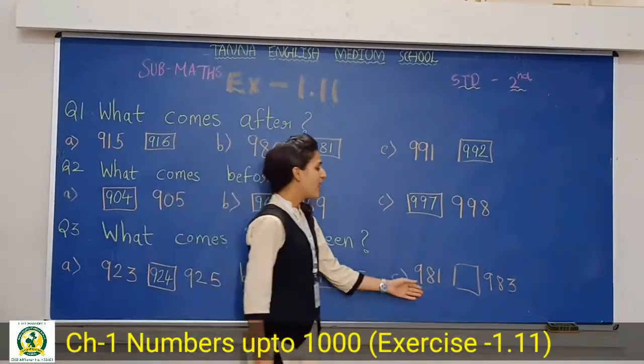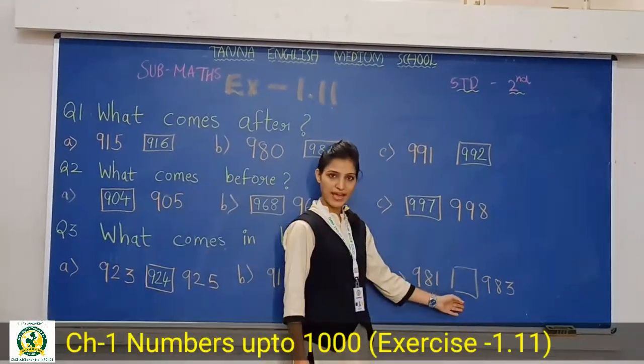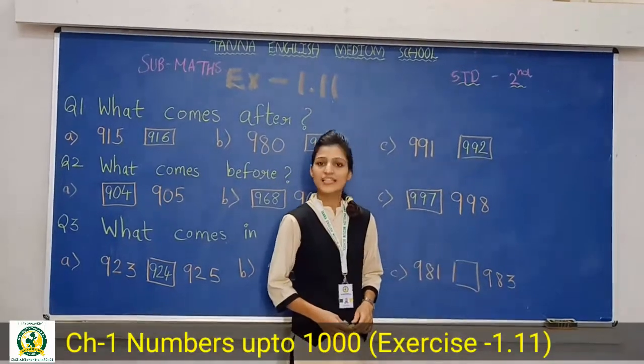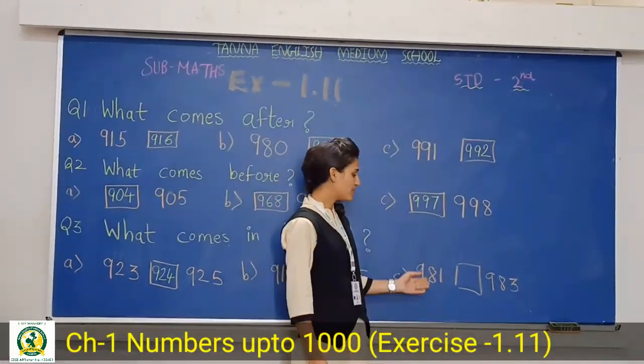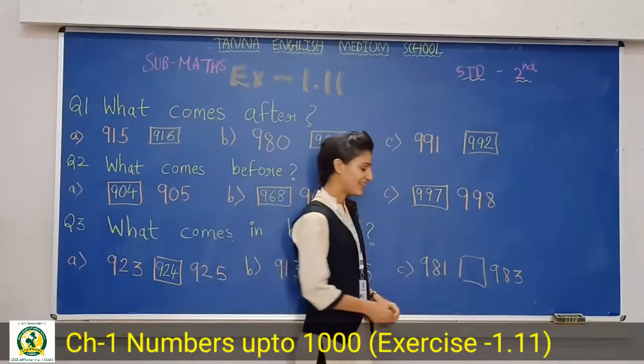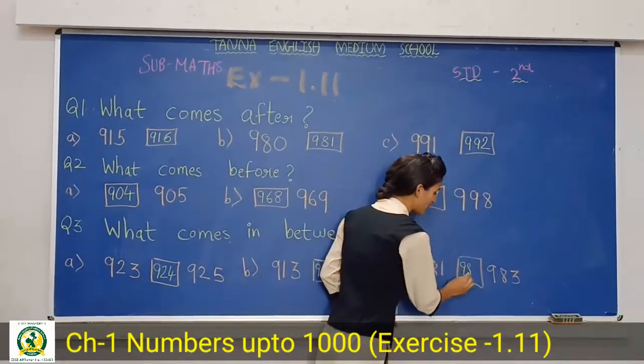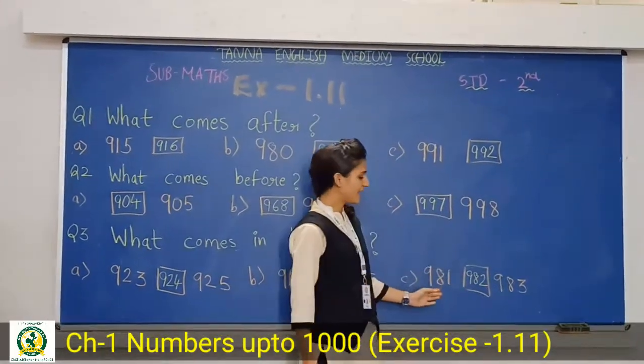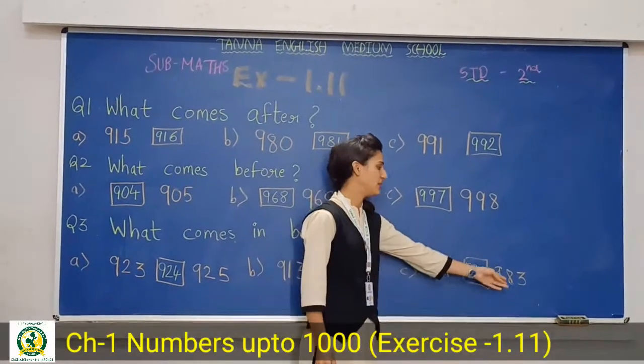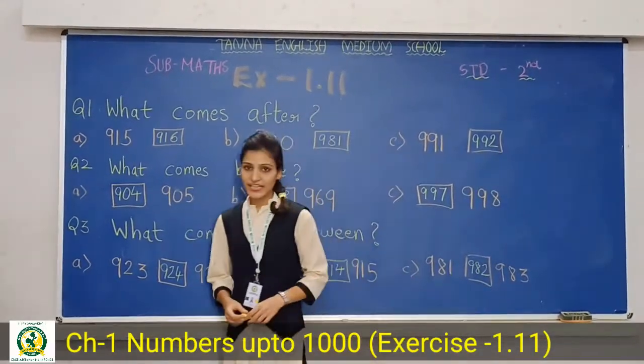Now, last is 981, blank, 983. So, now tell me what comes after 981? Right, 982. The sequence is 981, 982, 983. Okay, students?